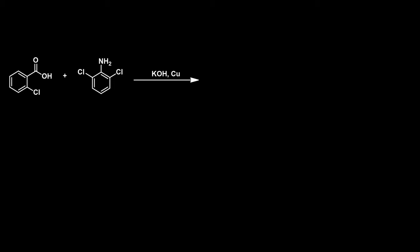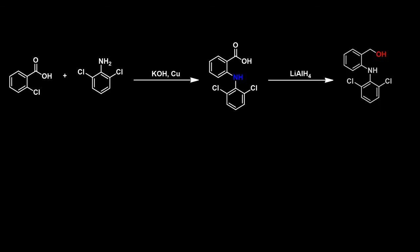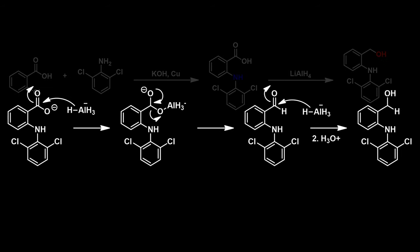The synthesis of diclofenac begins with an amide coupling between 2-chlorobenzoic acid and 2,6-dichloroaniline. Next, the carboxylic acid group is reduced using lithium aluminum hydride. This reaction involves the addition of hydride to the acid, forming an oxygen-aluminum complex that can act as a leaving group and be eliminated. This results in the formation of an aldehyde, which can react with another equivalent of lithium aluminum hydride, forming the alcohol group.